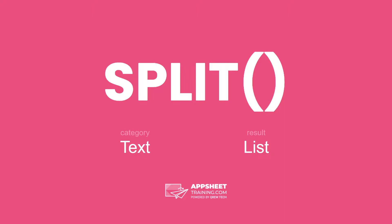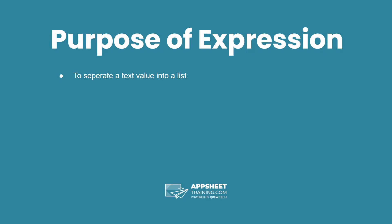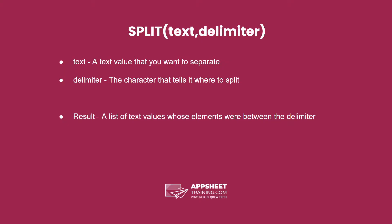The SPLIT expression is in the category Text and has a result of a List data type. The purpose of this expression is to separate a text value into a list. The SPLIT expression has two parameters: the first is a text value, which is the value you want to separate, and the second is the delimiter, which is the character that tells it where to split.